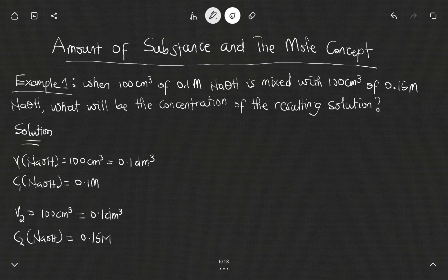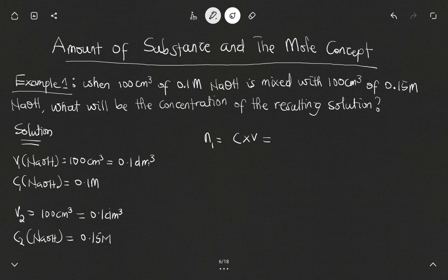The first thing we need to do is find the moles of the 0.1 molar sodium hydroxide and the moles of the 0.15 molar sodium hydroxide, then add them together to get total moles. Using n1 for the first sodium hydroxide: n1 = C1 × V1 = 0.1 × 0.1 = 0.01 moles.